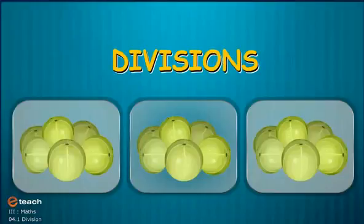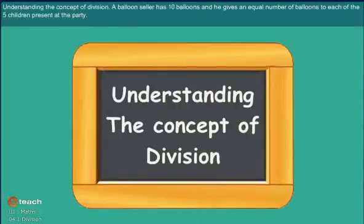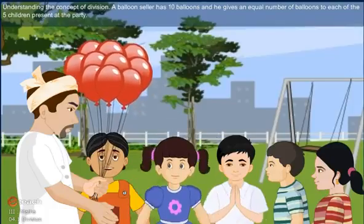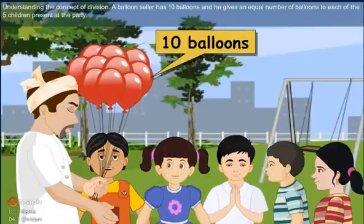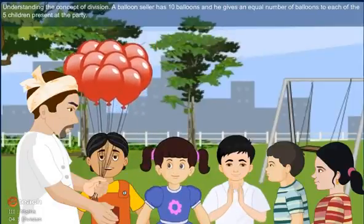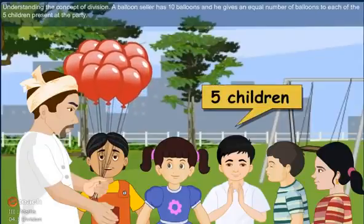Understanding the concept of division. A balloon seller has 10 balloons and gives an equal number of balloons to each of 5 children present at the party.